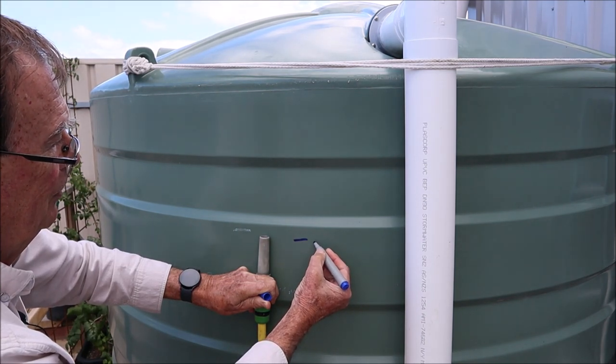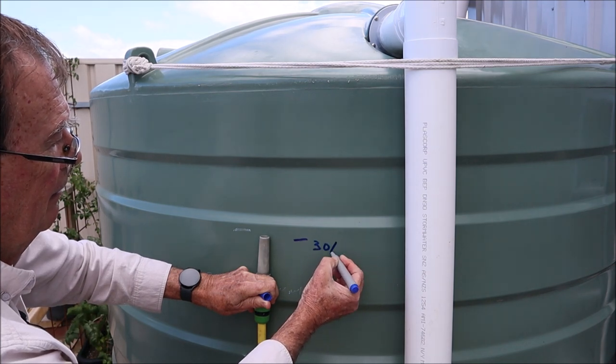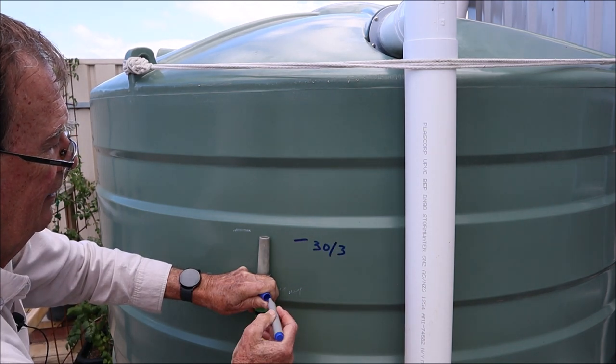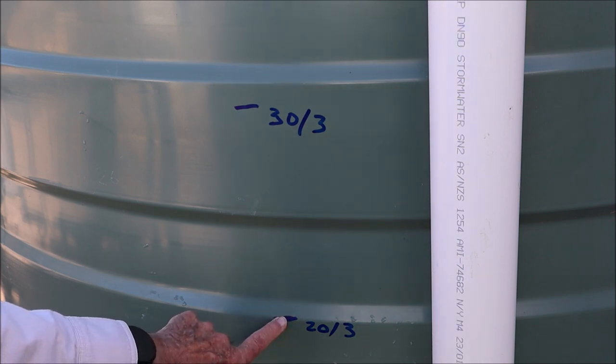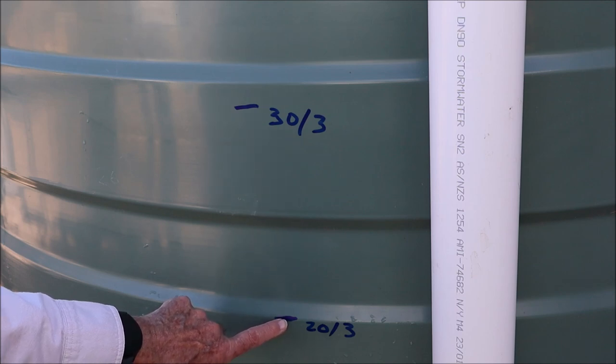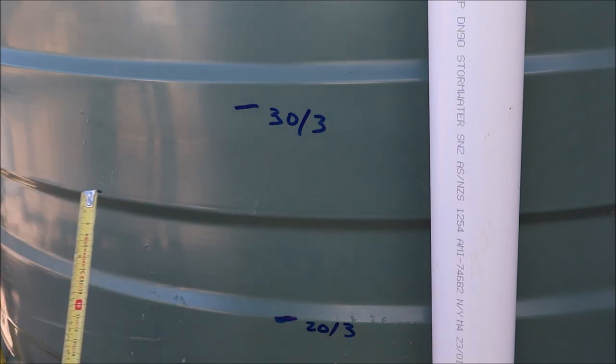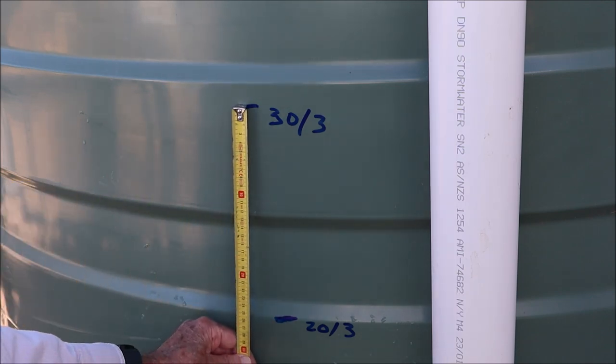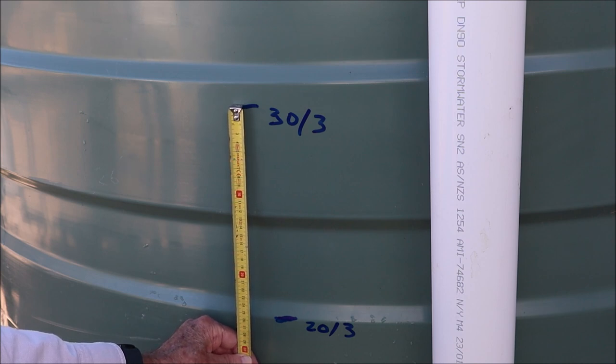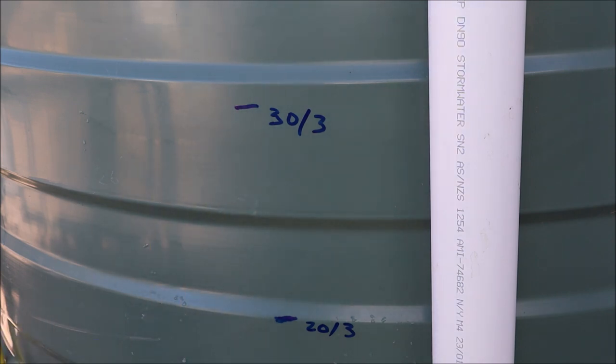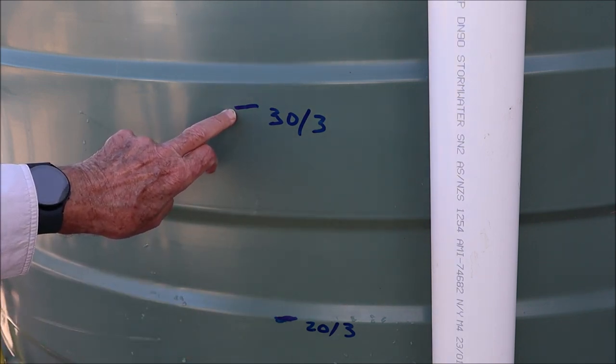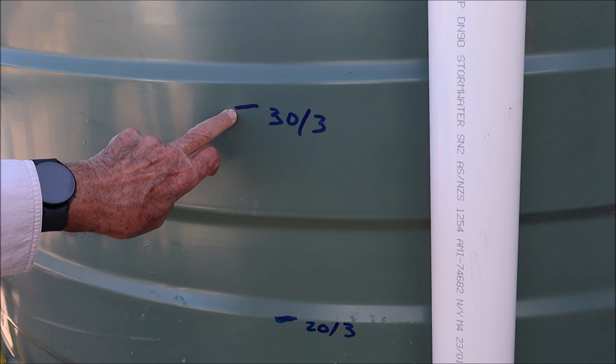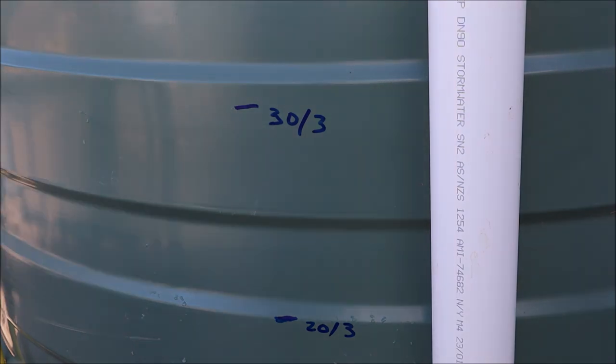Now since this mark was made, I know that I've had about 20 millimeters of rain from there to there, and just measuring the distance between those two it's about 26 centimeters. I know that 20 millimeters will raise the water level by 26 centimeters. The full height of the tank is 185 centimeters.